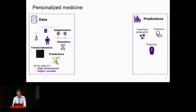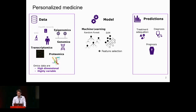This includes electronic health records, imaging, and all the omics data generated thanks to high-throughput methods. The idea is to go from this data to predictions like the treatment equation for a patient, improving diagnosis or prognosis. To go from this data to a prediction, there is a need for a model, and usually you can use a machine learning model such as a random forest or SVM.